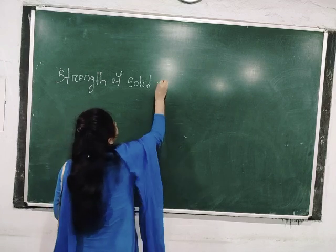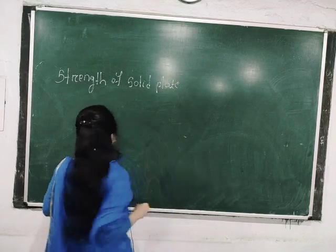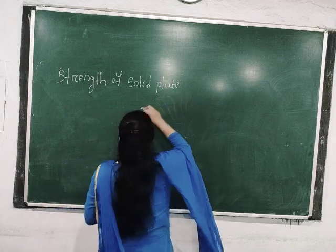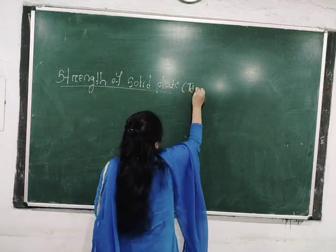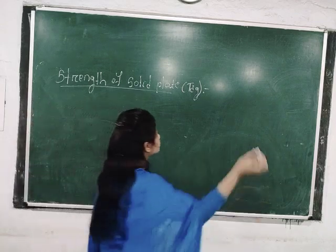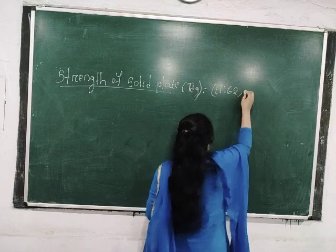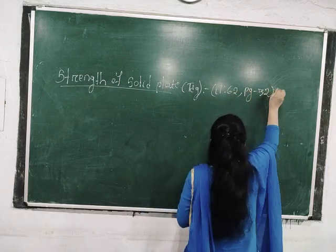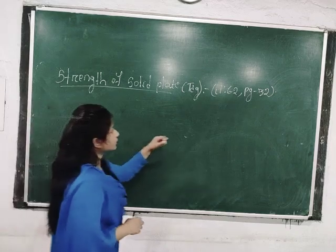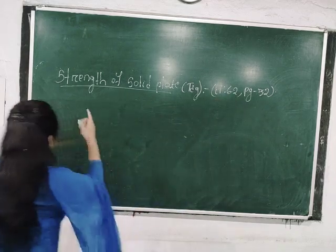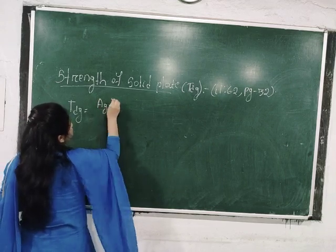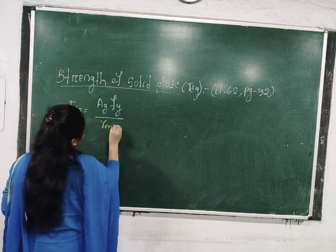The strength of the solid plate means we are calculating the strength of the plate which has no bolt hole. This is denoted by Tdg. You can refer to clause number 6.2, page number 32 for the strength of the solid plate. The formula to calculate the strength of the solid plate is Ag × fy divided by γm0.